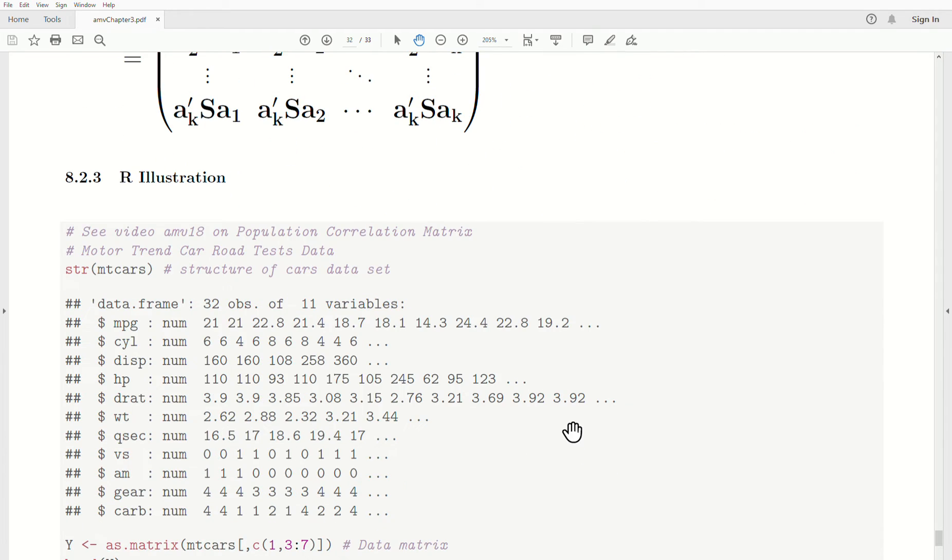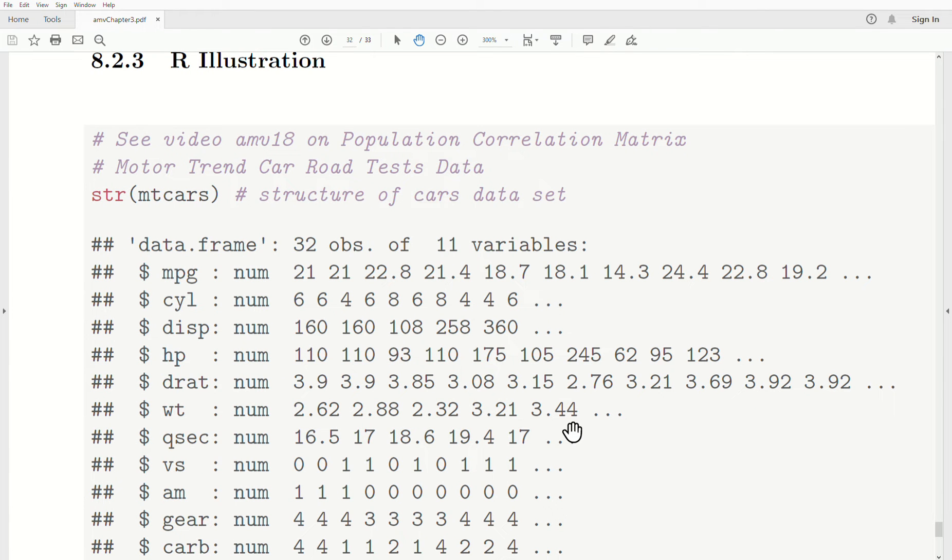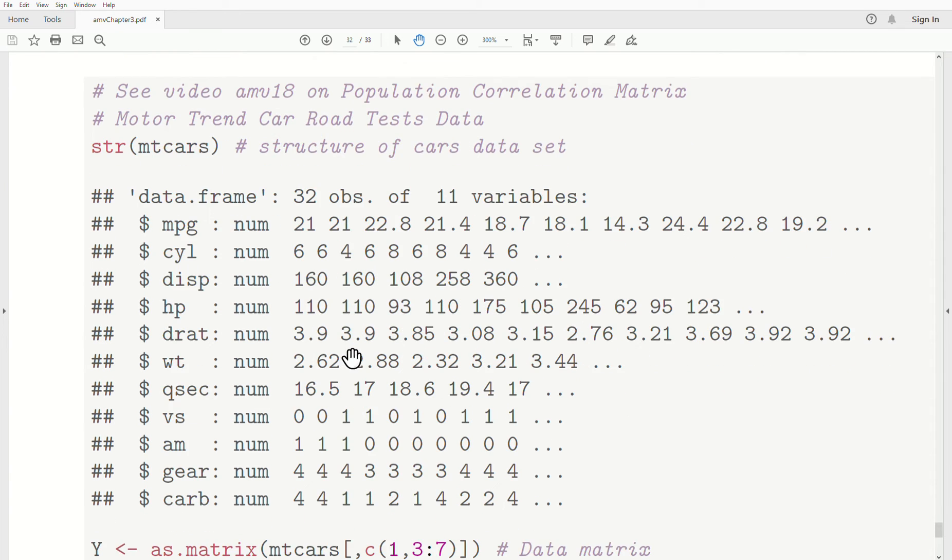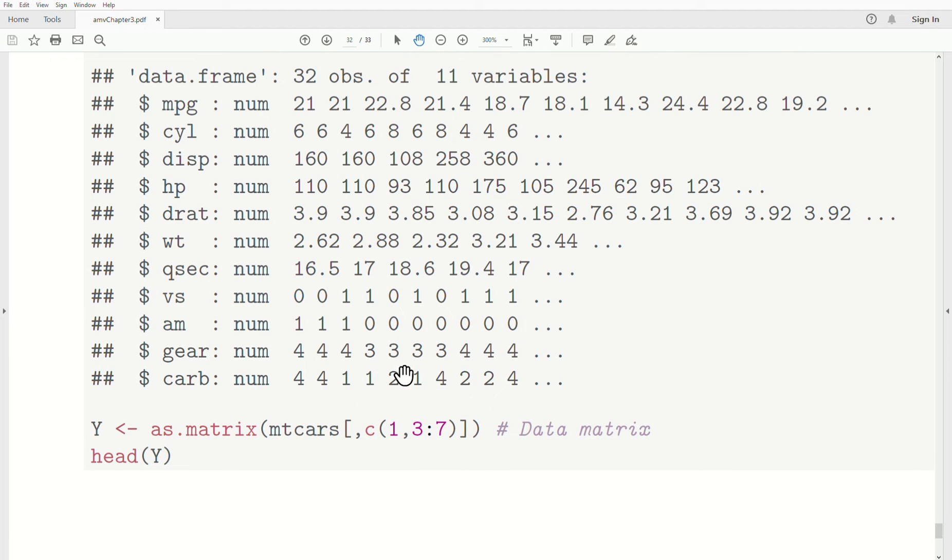Now quick, our illustration. If we look at the MT cars data set, we look at its structure. This was introduced previously in AMV 18, which stands for Applied Multivariate playlist, video 18. We introduced this motor trend cars road test data, where they looked at fuel consumptions and characteristics about the cars. The structure of it is a data frame, 32 observations, 11 variables. Let's grab columns 1, 3, 4, 5, 6, and 7 because they're the most continuous-like.